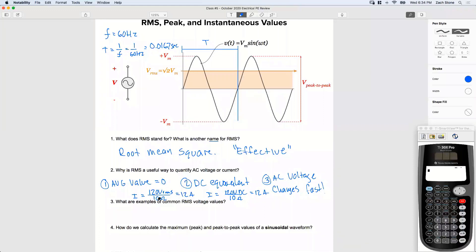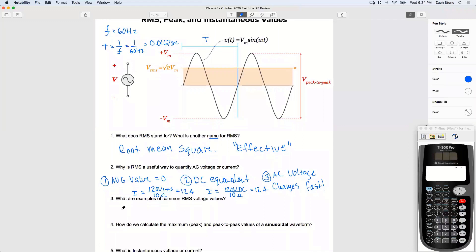All right, what are some examples of common RMS voltage values? What are some common RMS voltage values that we've maybe worked with or seen on paper? Yeah, 120. Let's go in order. How about we'll say 120, 208, 277, 240. Pretty much all the values we've been working with up until this point. We've been working with RMS values this whole time.